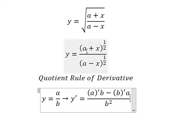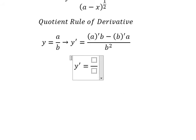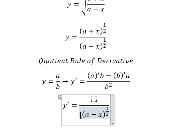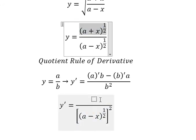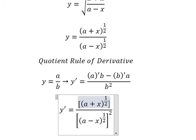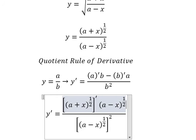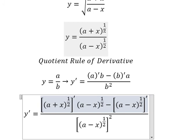Now we can apply this one. We will have the power 2 in here. So we do first derivative of this one, multiply by this one, minus we do first derivative of this one multiply by this one.